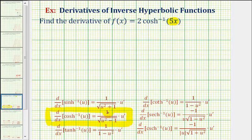The first factor is equal to the derivative of the outer function evaluated at the inner function, and the second factor, u prime, is equal to the derivative of the inner function.